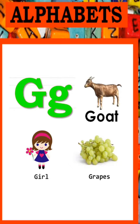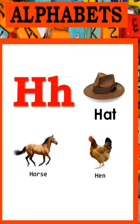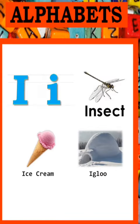G - G - Goat, Girl and Grapes. H - H - Hat, Horse and Hen.